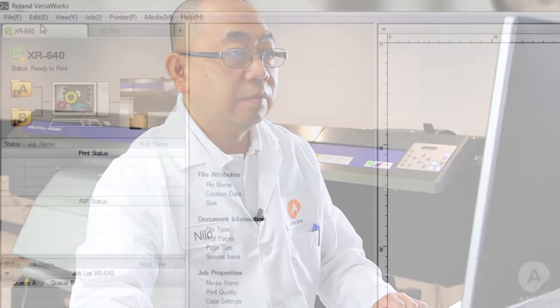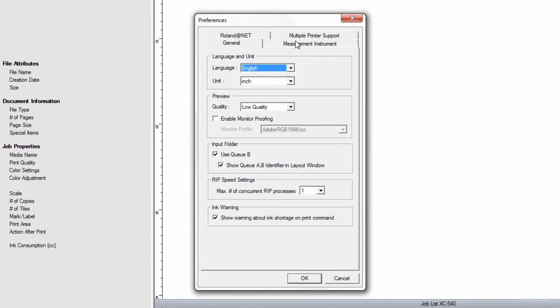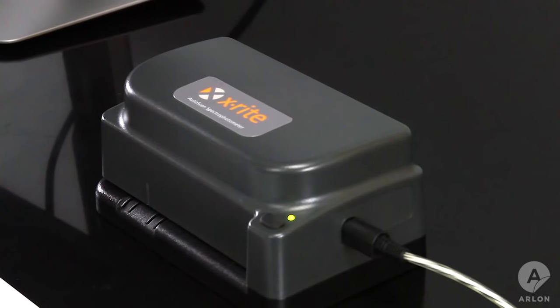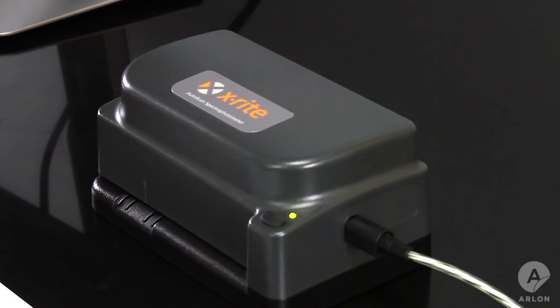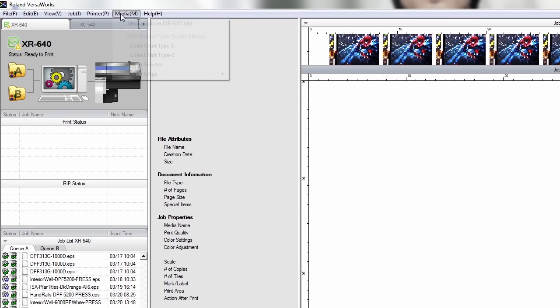To create a media profile with Roland VersaWorks, first set your measurement instrument settings and click OK. Today we are using the X-Rite DTP 41. Select the desired printer and go to VersaWorks media explorer.